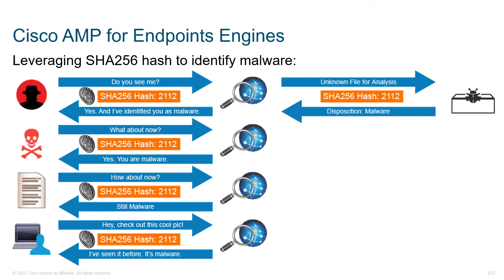Looking under the hood at Cisco AMP for endpoints, it typically begins by taking a look at the file itself and calculating a SHA-256 checksum. We calculate a checksum and ask: do we know this to be a good file or not? If it's malware, we know it's malware. If it's good, we know it's good. If it's unknown, that's where we can potentially punt that file up to the cloud for analysis.